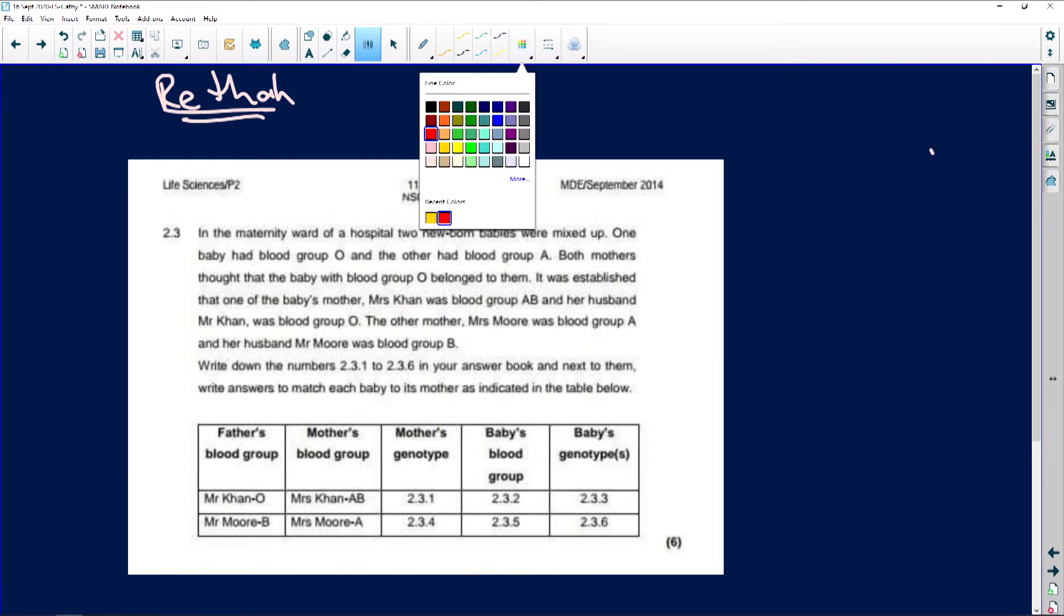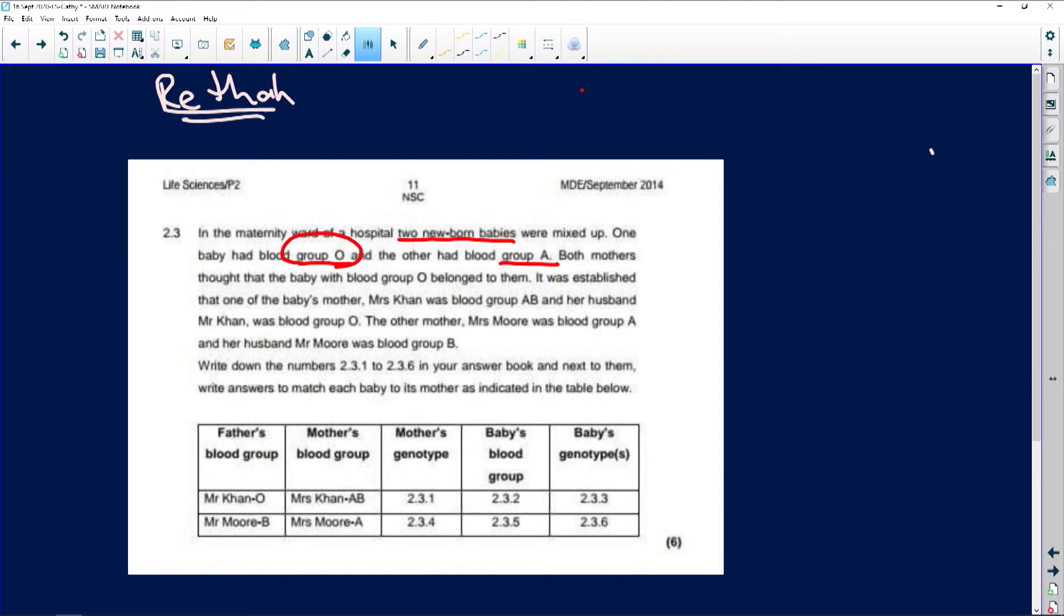I'm going to do red so we get nice bright. It says the maternity ward of a hospital had two newborn babies mixed up. One baby had blood group O and the other had blood group A. Both mothers thought the baby with blood group O belonged to them. So baby with blood group O is the one that's the issue.